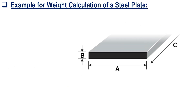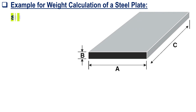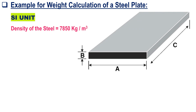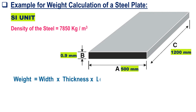An example for weight calculation of a steel plate in SI units is shown below. The density of steel equals 7850 kg per cubic meter. The dimensions of the steel plate are: width equals 500 mm, length equals 1200 mm, and thickness is 0.9 mm.